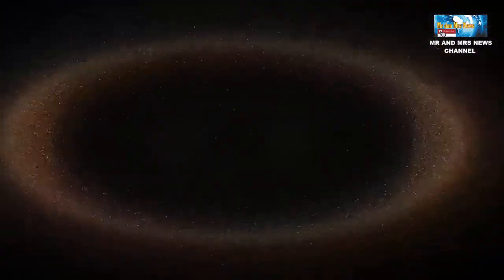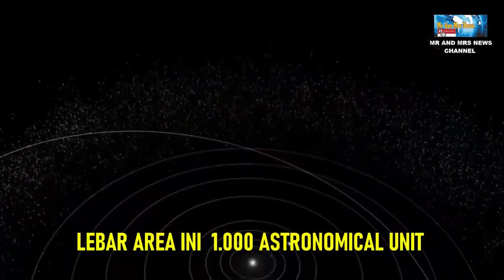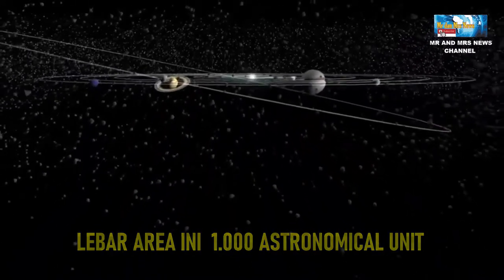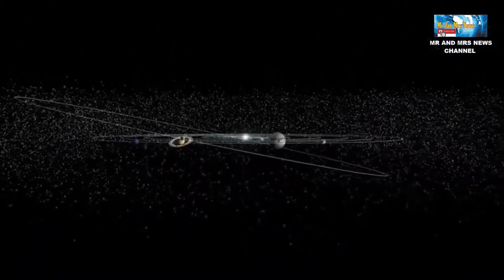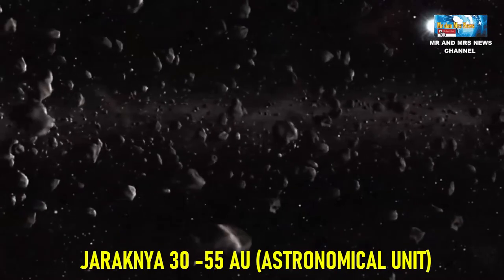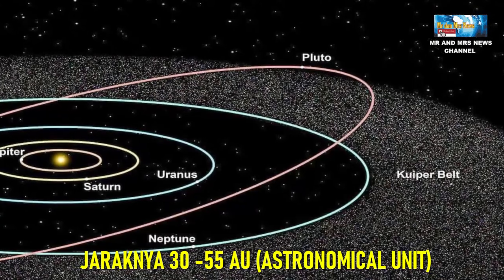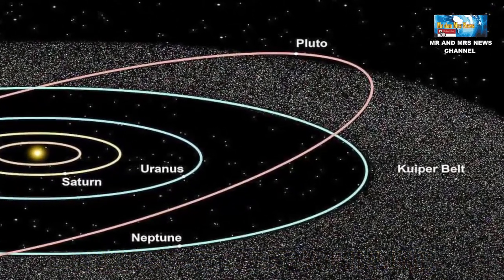Sabuk Kuiper adalah bagian terluar dari tata surya kita. Lebar area ini diperkirakan mencapai 1000 AU atau Astronomical Unit. Lokasinya terbentang sejak setelah orbit planet Neptunus, jaraknya sekitar 30 AU sampai 55 AU dari matahari. Sebagai acuan, 1 AU adalah jarak matahari ke bumi.